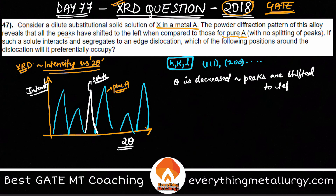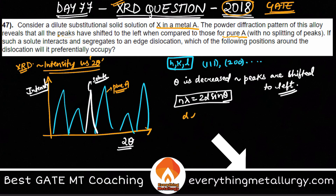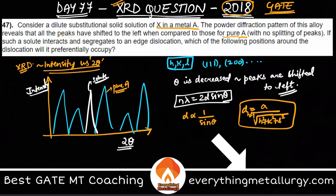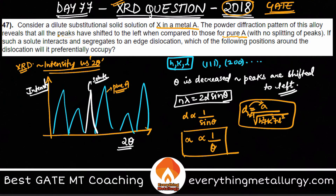From Bragg's law: nλ = 2d sinθ. For a constant wavelength λ, d is inversely proportional to sinθ. We also know d = a / √(h² + k² + l²), so d is proportional to the lattice parameter a. Therefore, a is inversely proportional to sinθ, and approximately inversely proportional to θ.